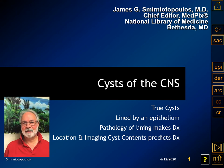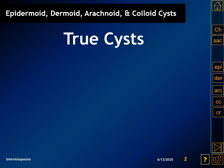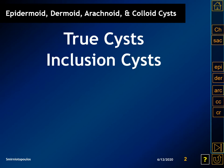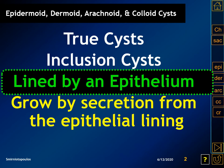I'm Jim Smyrniotopoulos and we're going to talk about cysts of the central nervous system. Epidermoid, dermoid, arachnoid, and colloid cysts are true cysts. They are inclusion cysts, they are lined by an epithelium, and they grow by the secretion from that epithelial lining.